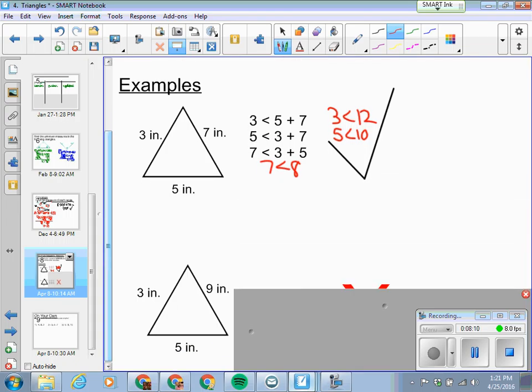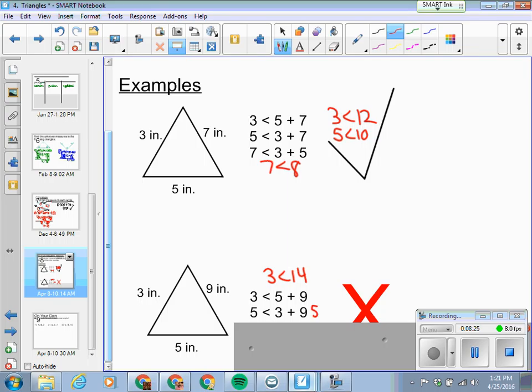Now what we test over here: is 5 less than 3 plus 7? Well, 3 plus 7 is 10. 5 is less than 10, so that works out. See where this is going here? The check mark kind of gives this away. Is 7 less than 3 plus 5? Well, 7 is less than 8. So all three sides, the theorem holds true. This is in fact a triangle.